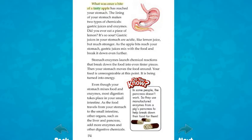What was once a bite of a tasty apple has reached your stomach. The lining of your stomach makes two types of chemicals: gastric juices and enzymes. Gastric juices in your stomach are acidic, like lemon juice, but much stronger. As the apple bits reach your stomach, gastric juices mix with the food and break it down further. Stomach enzymes launch chemical reactions that break down the food into even tinier pieces. Then your stomach moves the food around until it is unrecognizable — it is being turned into energy. Even though your stomach mixes food and enzymes, most digestion takes place in your small intestine.